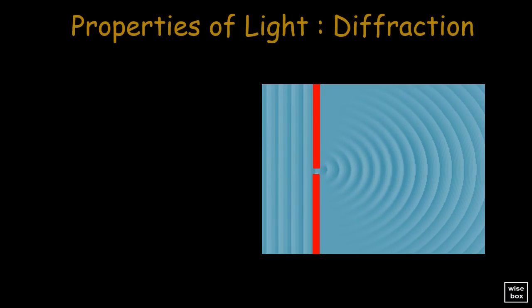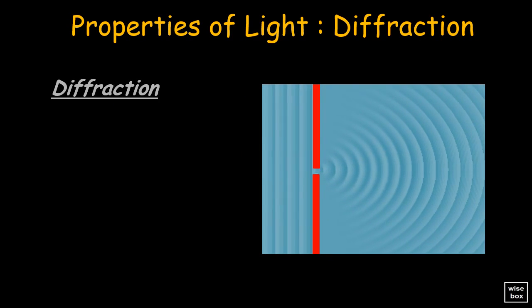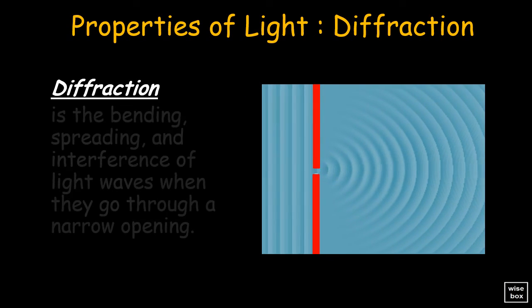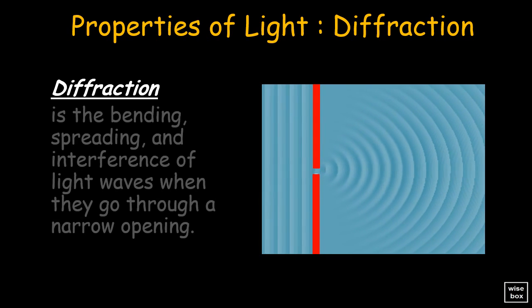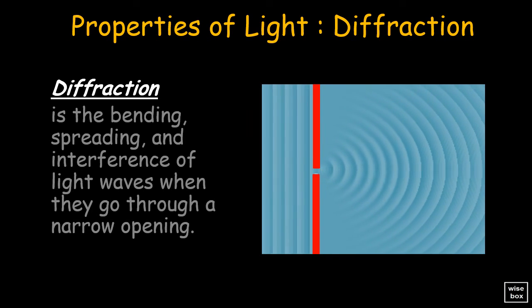Another property of light is diffraction. It is the bending, spreading, and interference of light waves when they go through a narrow opening.